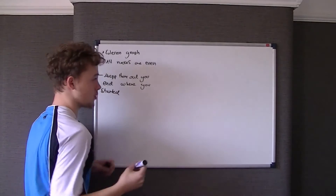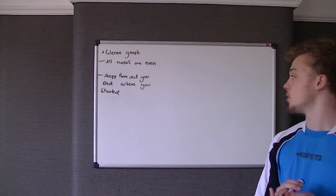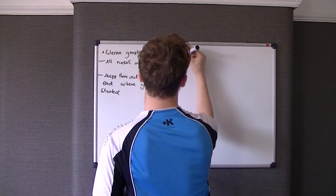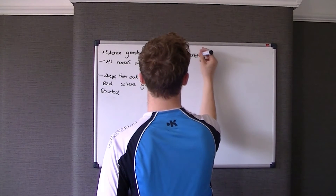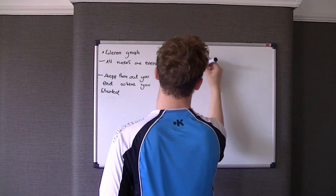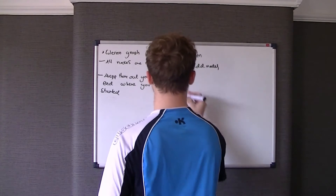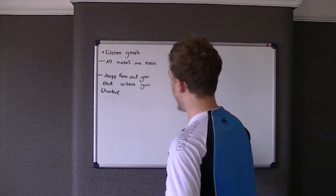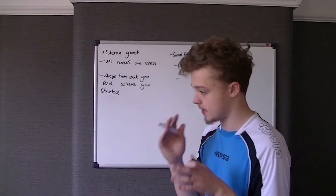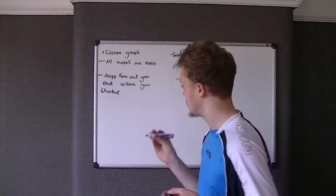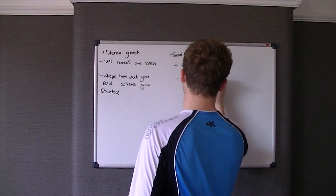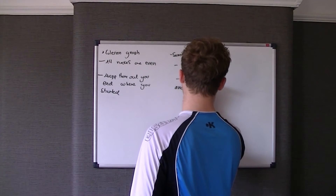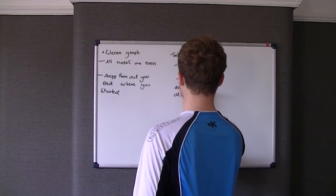The next thing we're going to talk about is something called a semi-Eulerian graph. This is where we've got essentially a graph where there are two odd nodes. So a semi-Eulerian graph is where we have two odd nodes, and therefore all the other nodes will be even. If you were to try to draw it without taking your pen off, you can do it, but you will start at one node and end up at a completely different one after mapping it out.